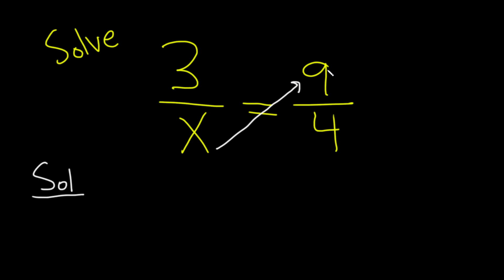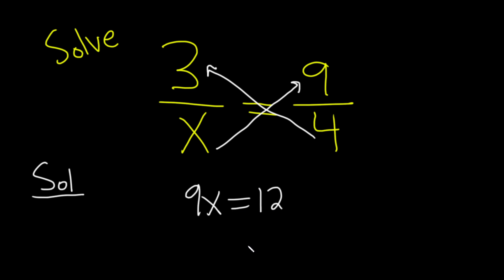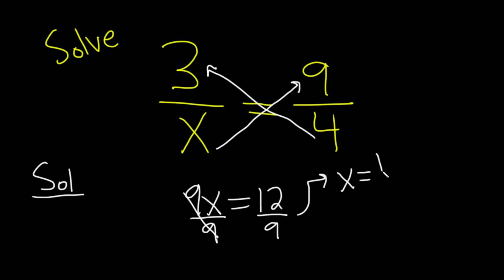So you do 9 times x, and then 4 times 3, which is 12. And then you just divide by 9 here because it's being multiplied by 9. So to get rid of it, you use division. So you get x equals 12 over 9.